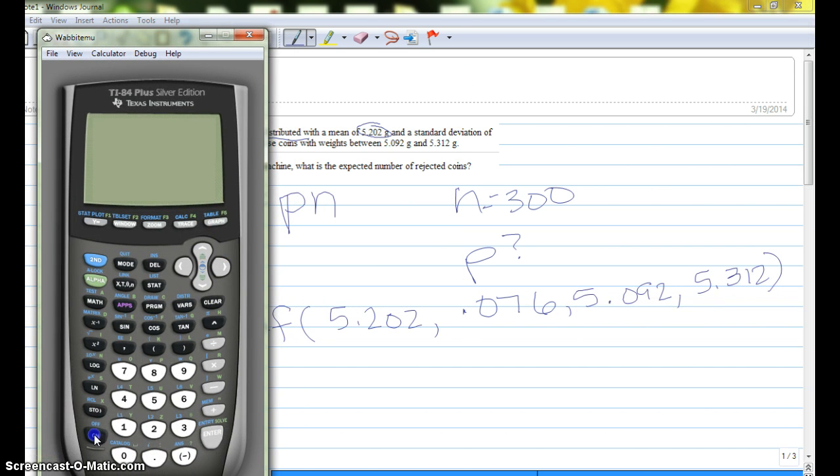We're going to turn it on obviously. We want a distribution, so we're going to hit 2nd, and then the VARS button that says distribution. And then we want number 2, normal CDF. That means normal, and the C just means continuous.